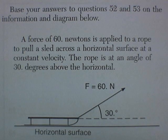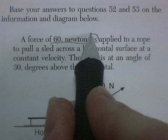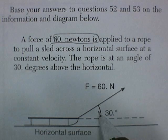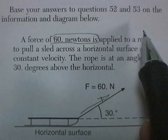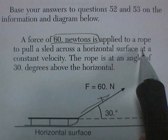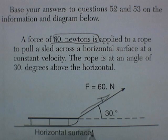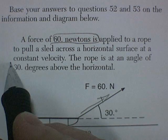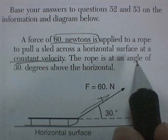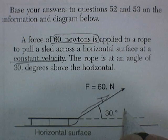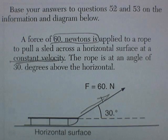A force of 60 newtons is applied to a rope pulling a sled across a horizontal surface at constant velocity. The rope is at an angle of 30 degrees above the horizontal. Nice little picture.